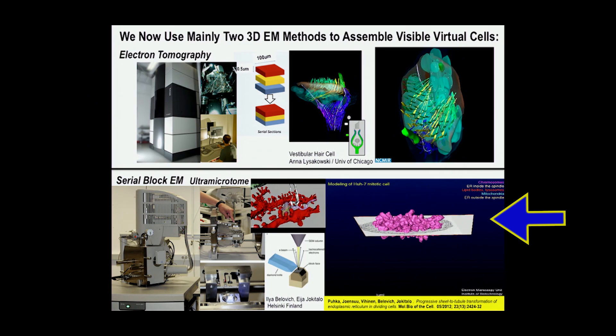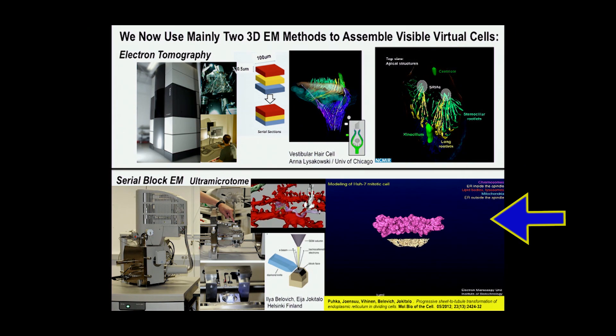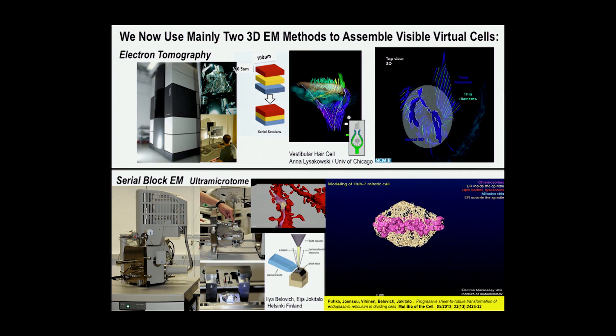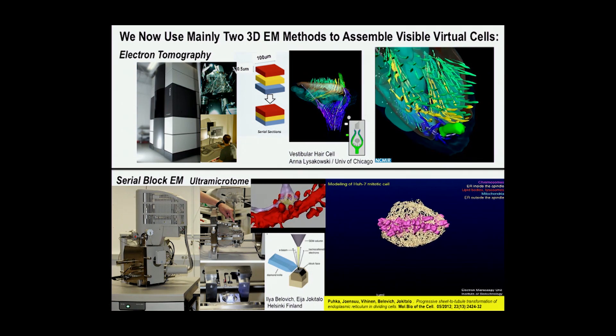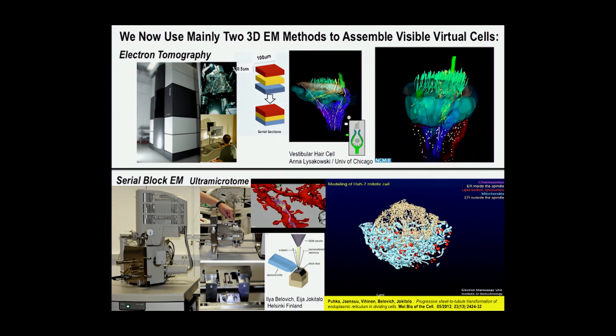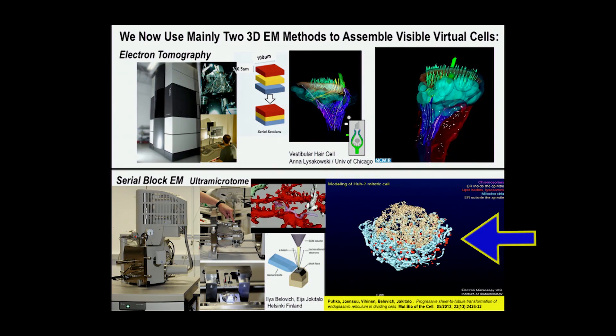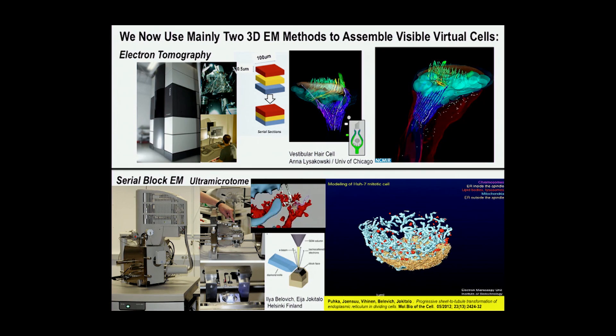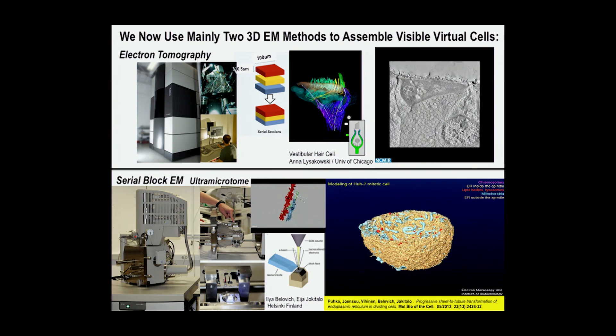If you selectively stain in a cell, as was done by these colleagues — this was a sample we imaged when we first got this going about 10 years ago — that's the endoplasmic reticulum in the mitotic spindle. If the endoplasmic reticulum is stained, in this case with horseradish peroxidase, you can then pick up mitochondria, lysosomes, and the ER. This cell is just in the early stages of dividing — so that's all the ER. How do you find that stuff, hiding in plain sight?